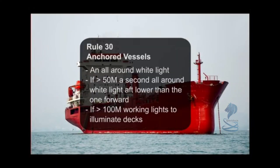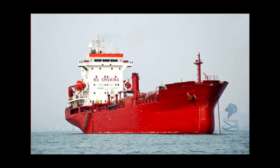Rule 30, Anchored Vessels: an all-around white light. If greater than 50 meters length overall, a second all-around white light, aft, lower than the one forward. If greater than 100 meters length overall, working lights to illuminate deck. Day shape: a ball in the fore part of the vessel.